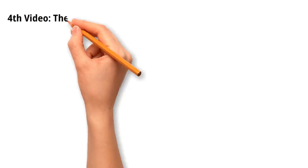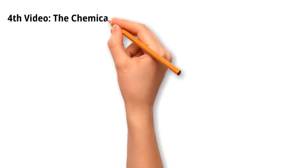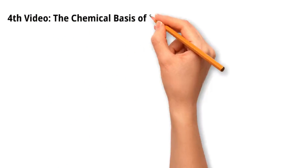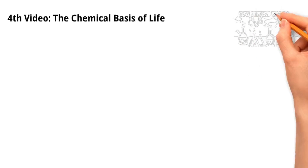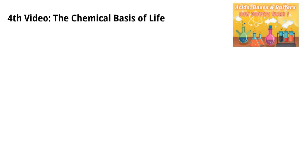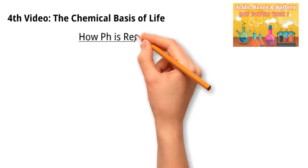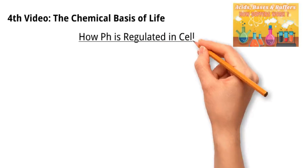This is the fourth video of the series, The Chemical Basis of Life. In the previous video, which I highly recommend you watch before this video, we explained the concepts of acids, bases, pH scale, and buffers, and we went through the mechanism by which buffers work. Now, let us move on to talk about how pH is regulated in cells.